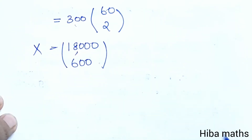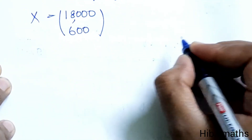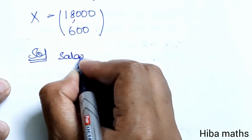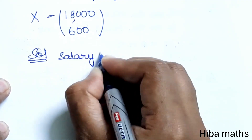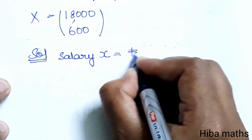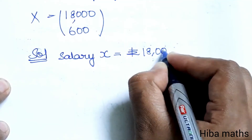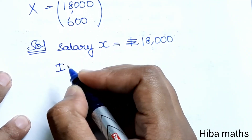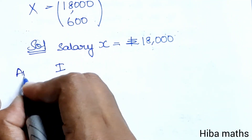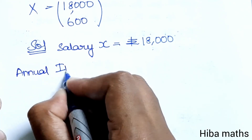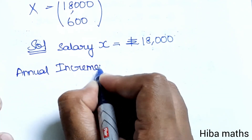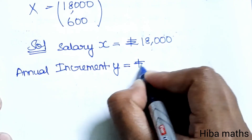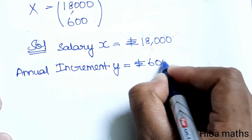This is the capital X value in the solution. The starting salary is 18,000, that is Rs. 18,000. The annual increment y is equal to Rs. 600. Thank you so much for watching.